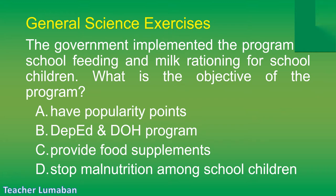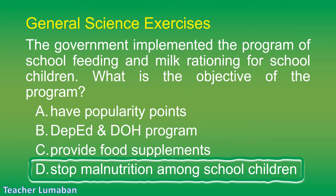The correct answer is Letter D: stop malnutrition among school children. The government's objective in the school feeding and milk rationing program for school children is to stop malnutrition among school children.